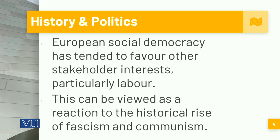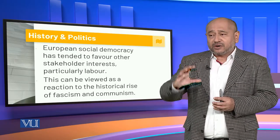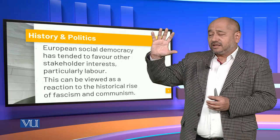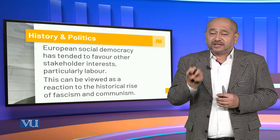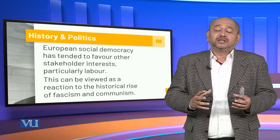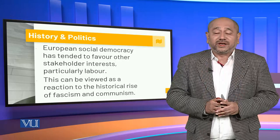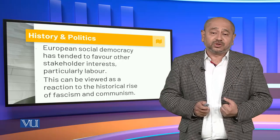The European social democracy model favored stakeholder interests, particularly labor. This can be seen as a reaction to the historical rise of fascism and communism. Because Europe was adjacent to the Soviet bloc and also experienced fascism internally, and because the divide between the proletariat and the bourgeoisie was evaporating, the concerns of the labor force — their rights, their environment, and their importance within the stakeholder framework — became very important. That was the basic focus of the European social democracy model.